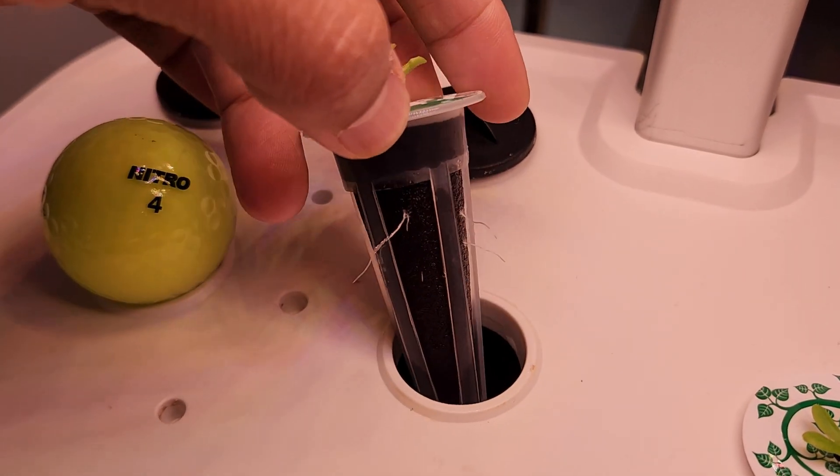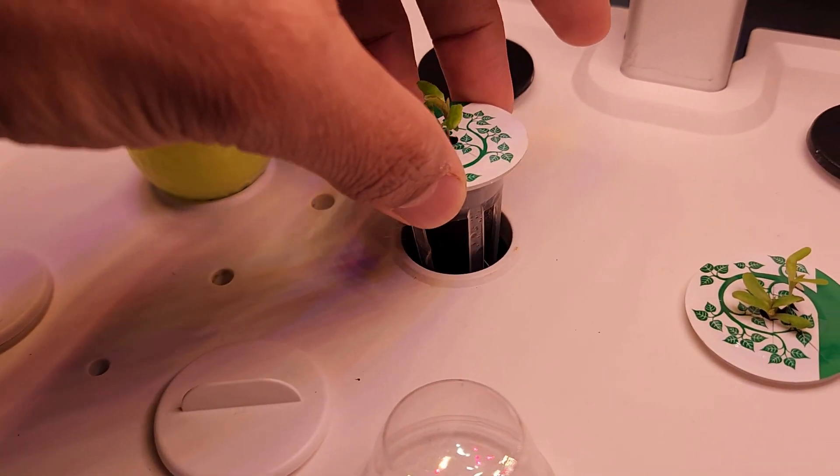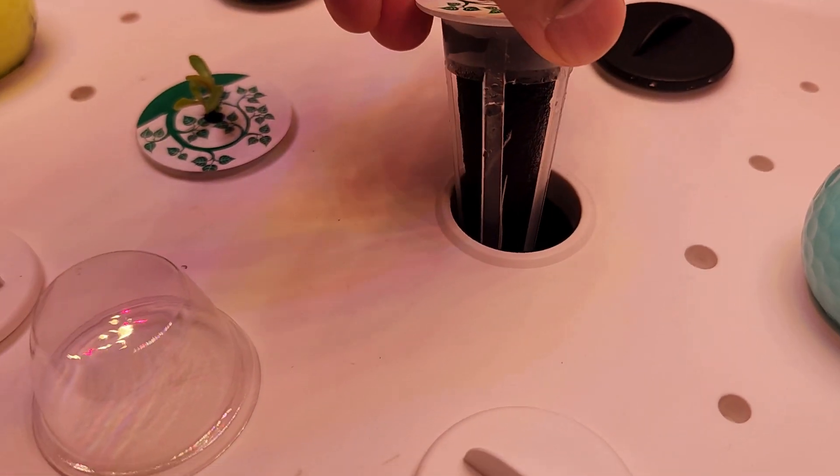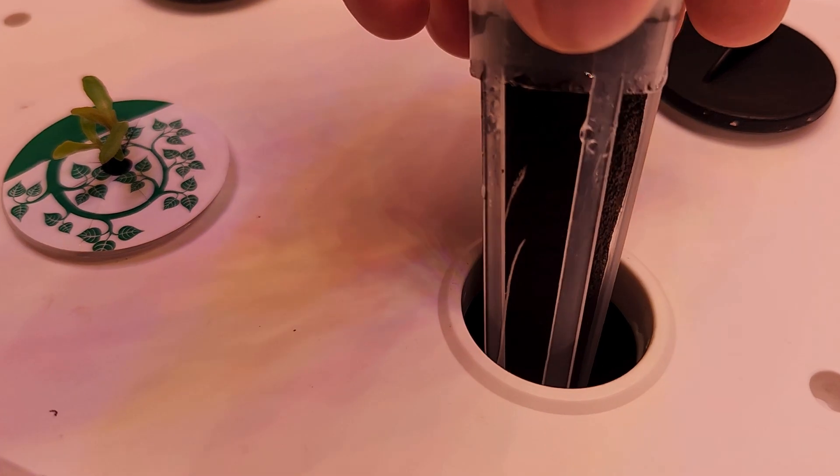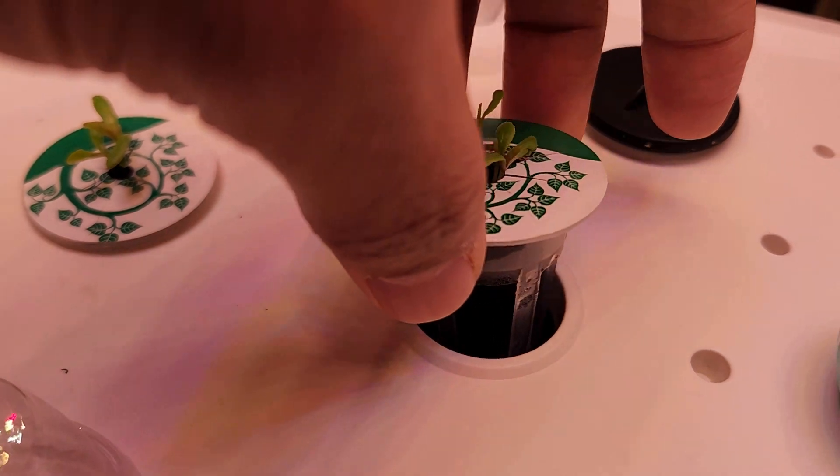Oh look at this. The roots came through the sponges very well. Very nice. Now let's check the other pod. Look at this. The roots are coming very nice from this sponge as well. So it's very good.